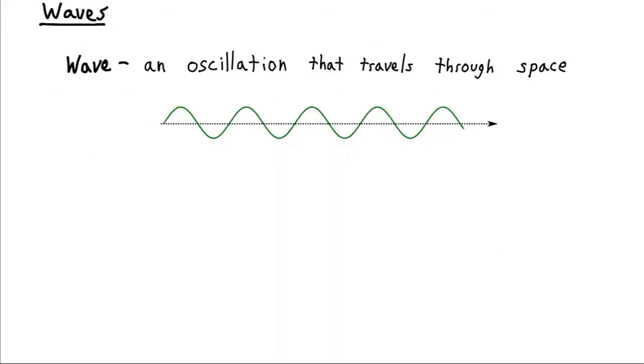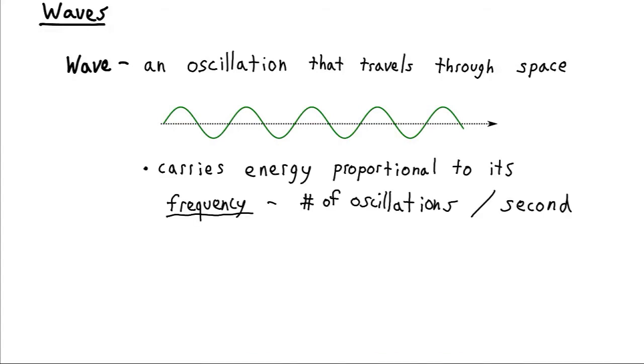Because quantum theory expresses everything as a wave, we're going to want to develop a little bit of intuition for how waves behave. So what a wave is, a wave is an oscillation that travels through space. And another feature of a wave is that it carries energy.